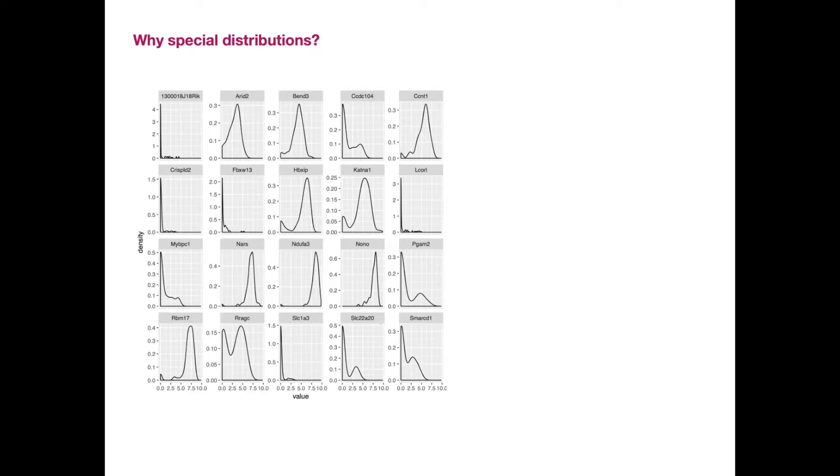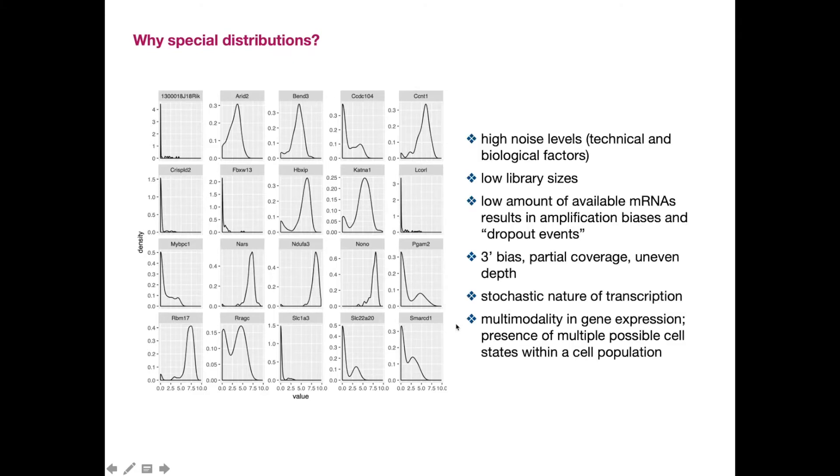And the big issue is that there is not a one-fits-all distribution for single cell data. We have some highly expressed genes that almost start approaching a normal or binomial distribution. Then we have these lowly expressed genes where most of the expression is zero. And then we have something in between. So there's a whole range of different distributions that people try to fit to single cell data.